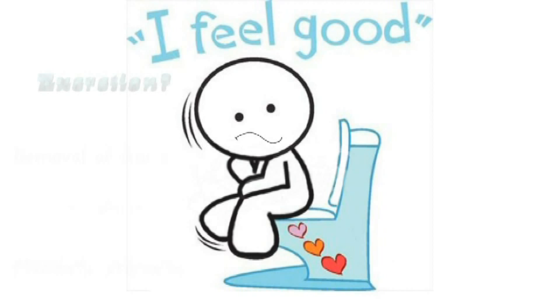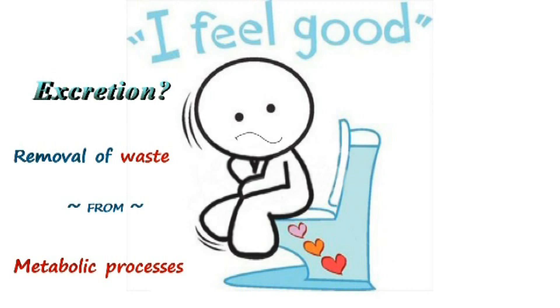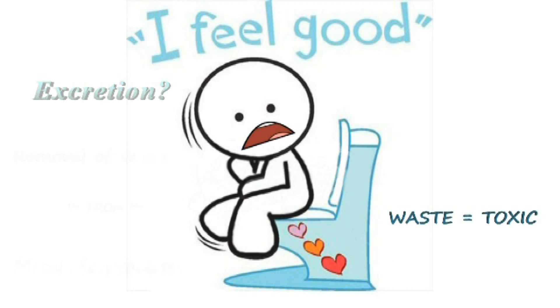So what exactly is excretion? Excretion is the removal of waste products from the body that were produced during metabolic processes. The key words here are waste and metabolic processes, because excretion deals with removing the waste produced by our bodies. These products would be very toxic if they were allowed to accumulate, so therefore there must be something in place in order to remove them.